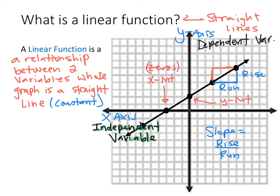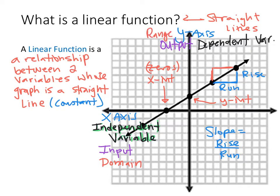The x-axis is known as our input — the values we're going to put in — and the y-axis is going to be known as our output. One more term for the x-axis is not only is it the input and the independent variable, but this is what we call the domain. The domain of a function is all the representative x values that we can use. And then our y-axis is our range.